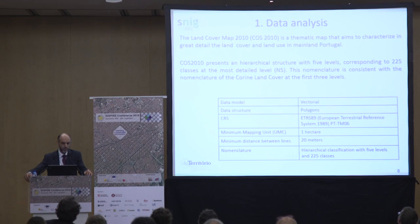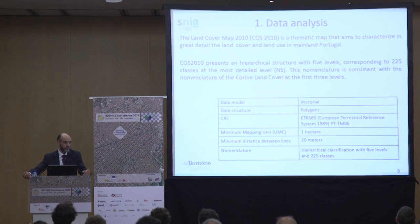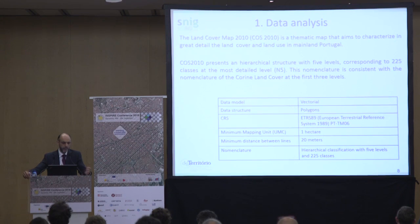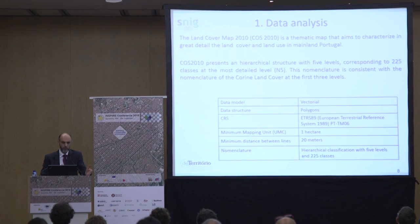For this land cover and land use map of Portugal, the nomenclature is consistent with the Corine land cover map. The current map has five levels of classification with 225 classes. It's a vector map with polygons, the reference system is already in ITRS with a specific projection for Portugal. The minimum mapping unit is one hectare and the minimum distance unit is 20 meters.